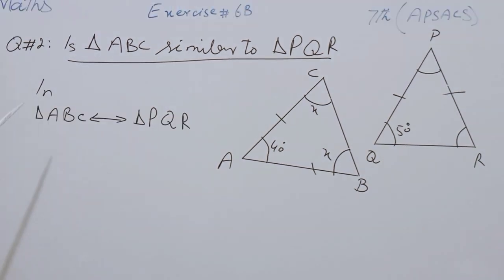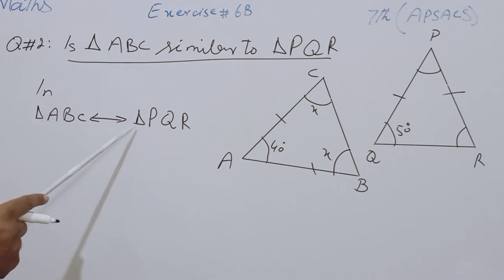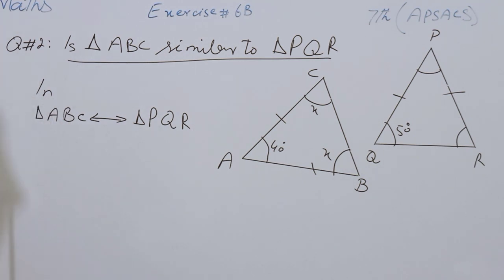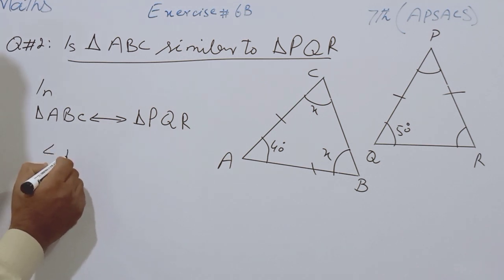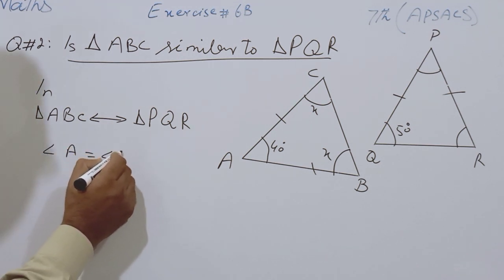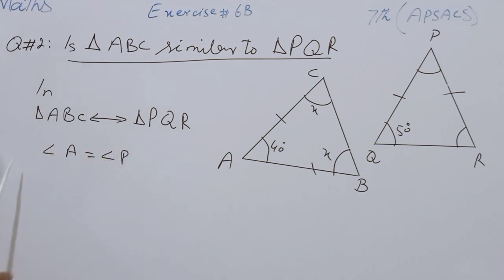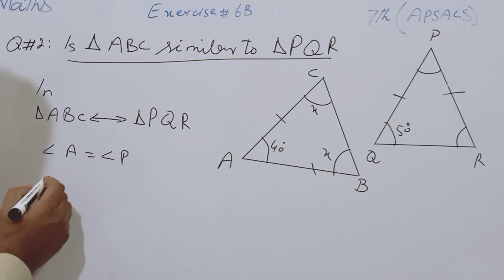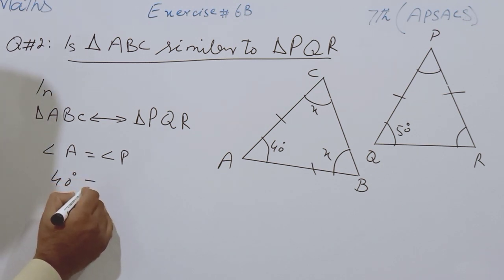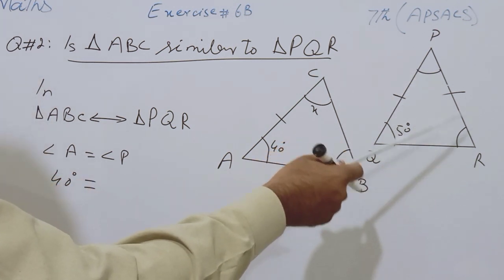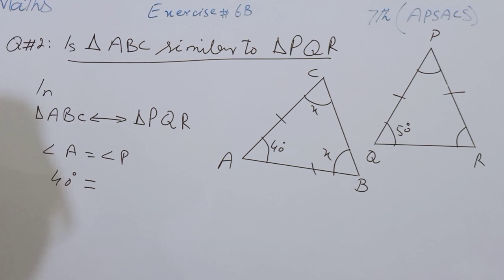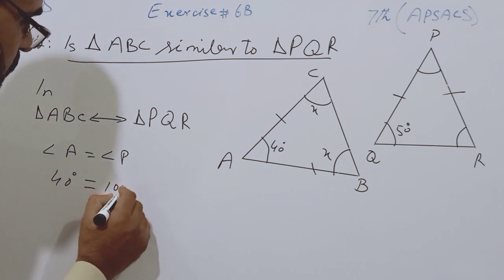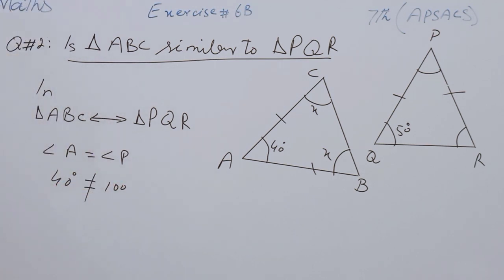So students, we will write: in Triangle ABC, the correspondence is Triangle PQR. Angle A must be equal to Angle P if the triangles are similar. Now I will put the values of Angle A and Angle P. The value of Angle A is 40 degrees and the value of Angle P we found was 80 degrees, so Angle A and Angle P are not congruent.